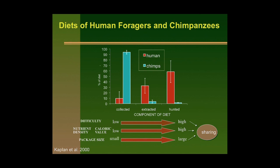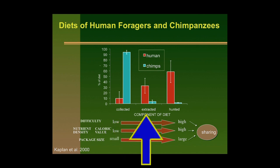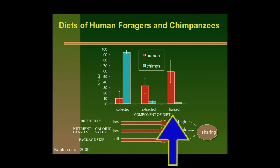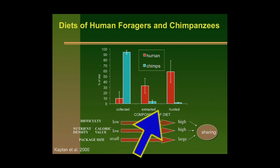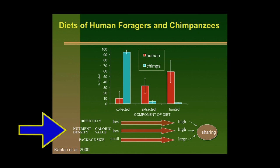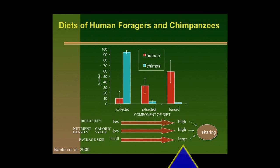Comparing humans to chimpanzees, our closest living relative, there are three types of resources: collected foods like leaves and fruits picked off plants; extracted gathered foods like nuts and tubers requiring digging or processing; and hunted foods. Chimpanzees are primarily eating leaves and fruits, while humans eat almost no leaves, very little fruit, much more extracted foods, and a much greater hunted proportion. These categories get more skill-intensive, more nutritious, and have bigger package sizes—but those bigger packages create variance and create needs for sharing.